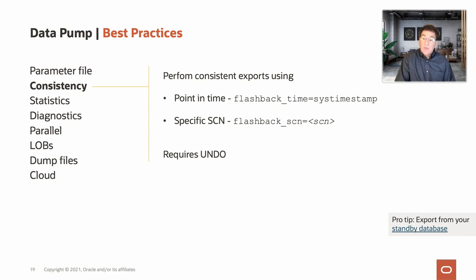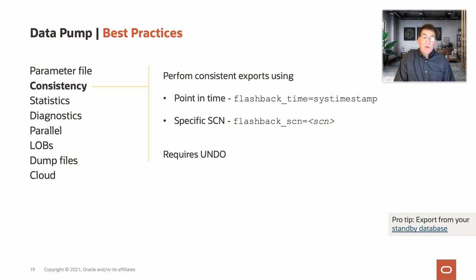The SCN, or system change number, marks a consistent point in time in the database that export uses to enable the flashback query utility. The best practice is either to use flashback_time that uses the SCN nearest to sys_timestamp, or a specific SCN. In either case, this allows all the data in the exported tables to be retrieved as of a particular SCN, and this requires configuring automatic undo management. Another approach is to export from Data Guard — you can turn the Data Guard into a snapshot standby temporarily to do the export. Currently, it's not possible to do this with active Data Guard and DML redirect feature because data pump requires DDL for create table commands to coordinate the export.